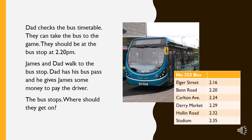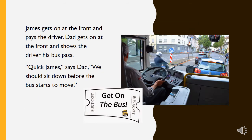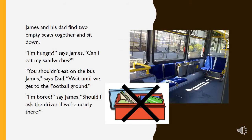The bus stops. Where should they get on? James gets on at the front and pays the driver. Dad gets on at the front and shows the driver his bus pass. Quick, James, says Dad — we should sit down before the bus starts to move. James and his dad find two empty seats together and sit down.